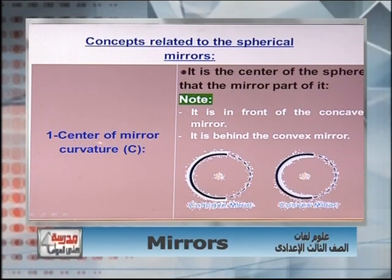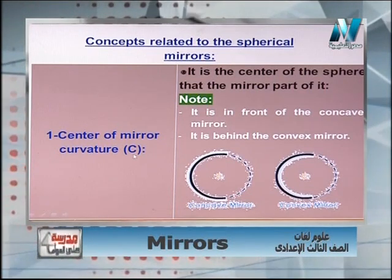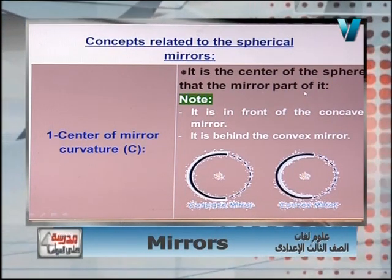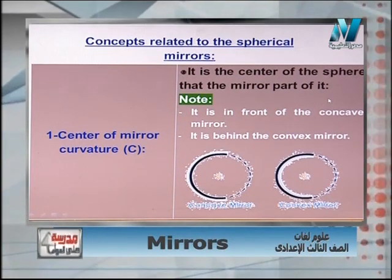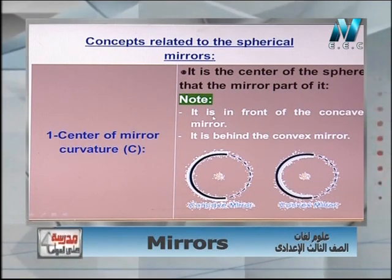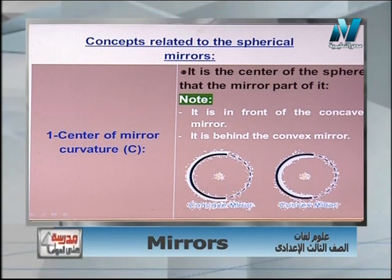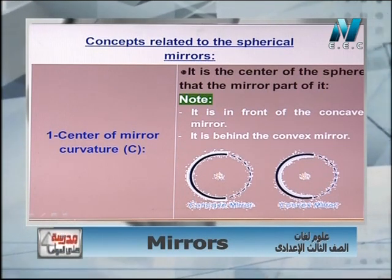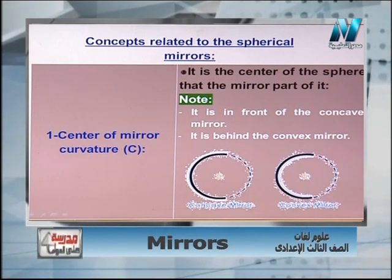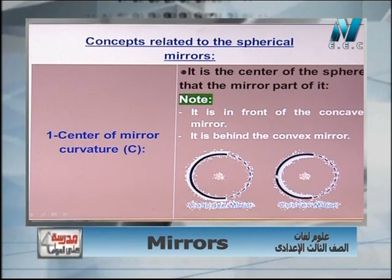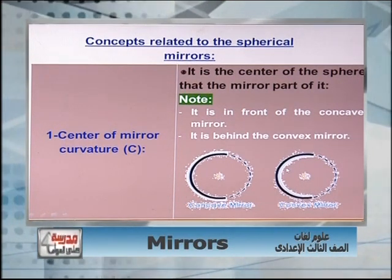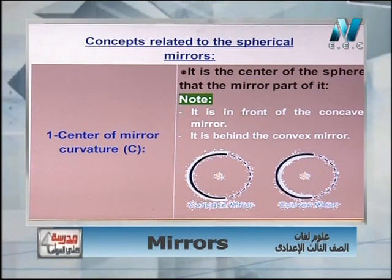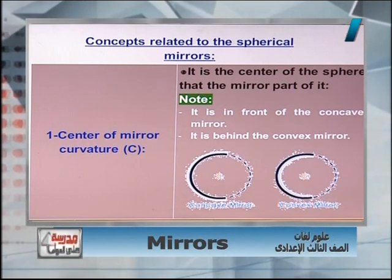Concept number one: the center of curvature of the mirror, symbol C. The definition is: it is the center of the sphere of which the mirror is a part. As we see in the diagram, for the concave mirror the center C is found in front of the mirror, while for the convex mirror the center C is found behind the mirror, since the concave reflects from the inner surface and the convex from the outer surface.